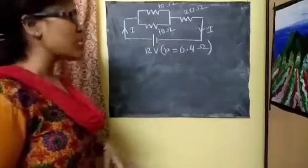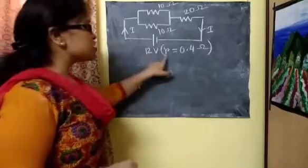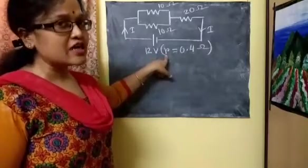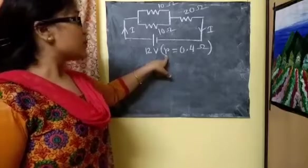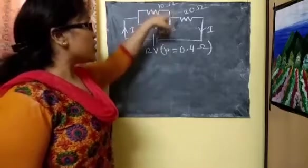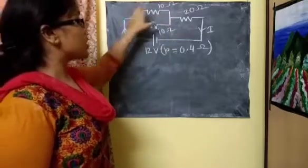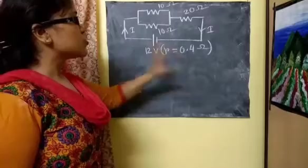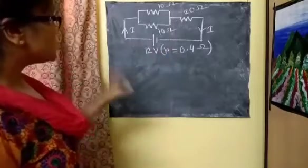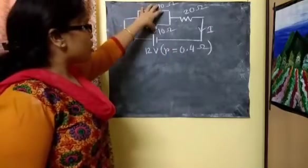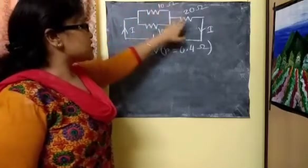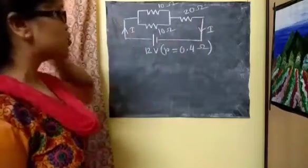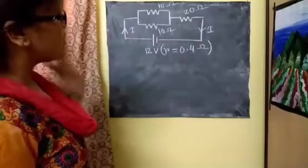This is the simplest formula. Another thing: small 'r' is given, which means the internal resistance value is given. So here, not only do we need to consider all three resistances, we also need to consider the internal resistance. This is a parallel combination, and this is a series combination — and again there is internal resistance, also in series combination. So, one after another we are doing.